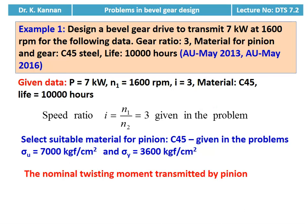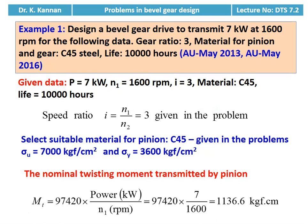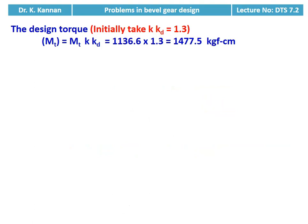We calculate the nominal twisting moment. MT = 97420 × power divided by pinion speed = 97420 × 7 divided by 1600 = 1136.6 kilogram force centimeter. Then we calculate the design torque. Initially we take KKD = 1.3. Design torque MT(design) = MT × KKD = 1136.6 × 1.3 = 1477.5 kilogram force centimeter.